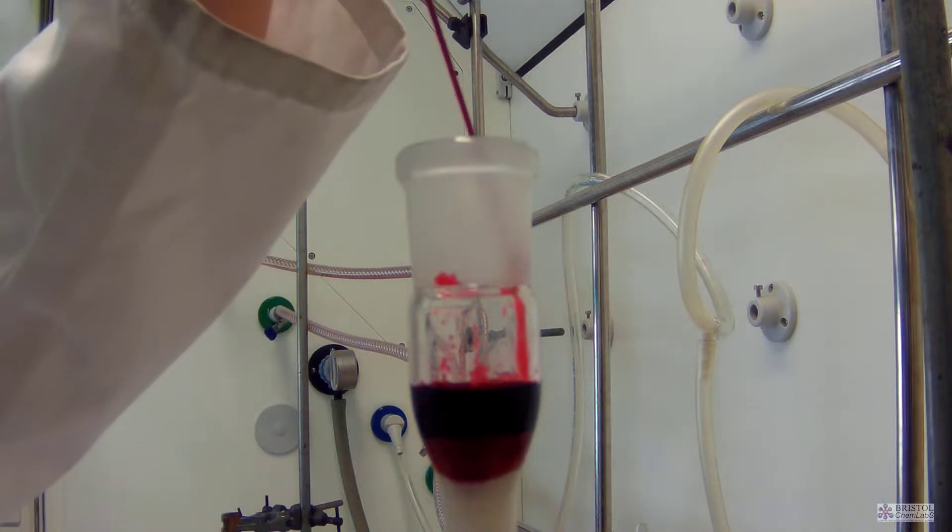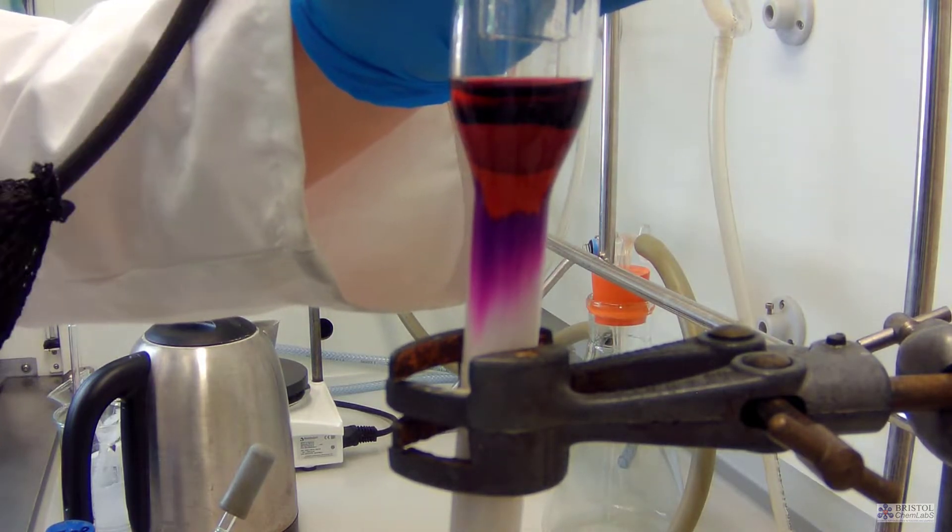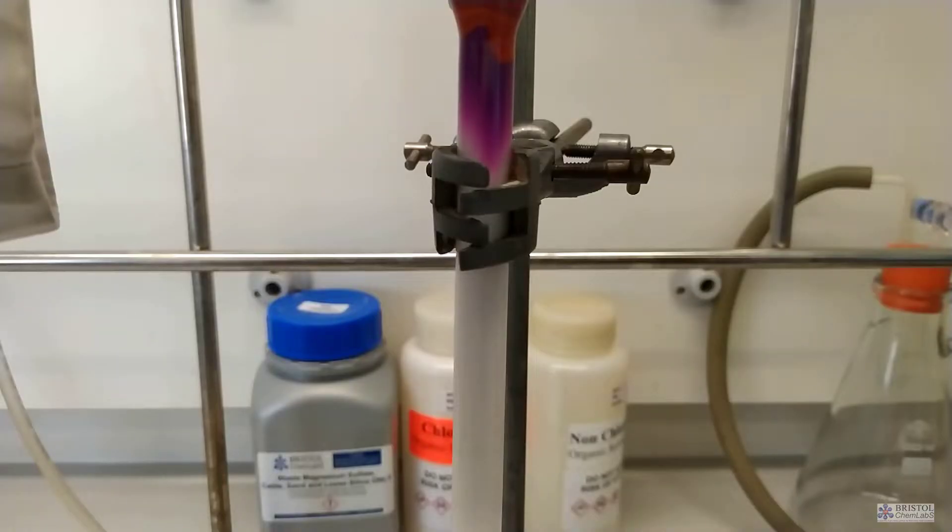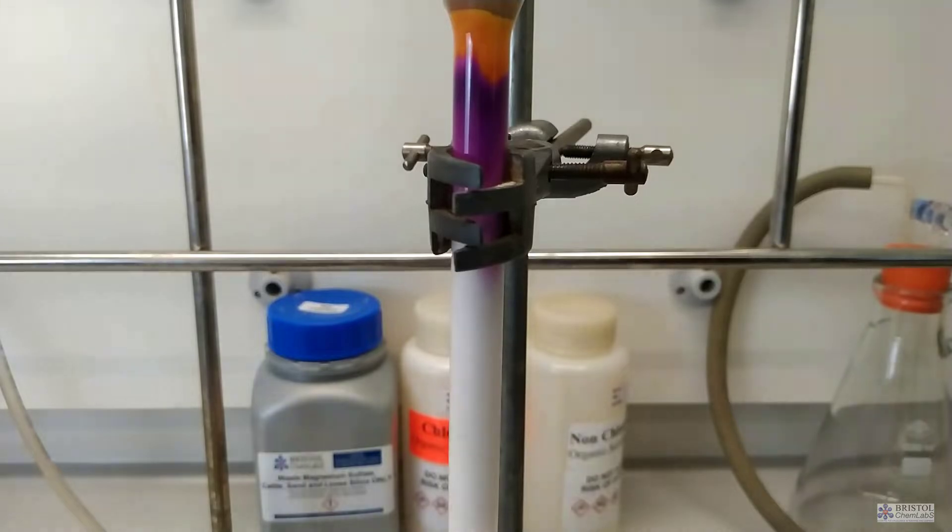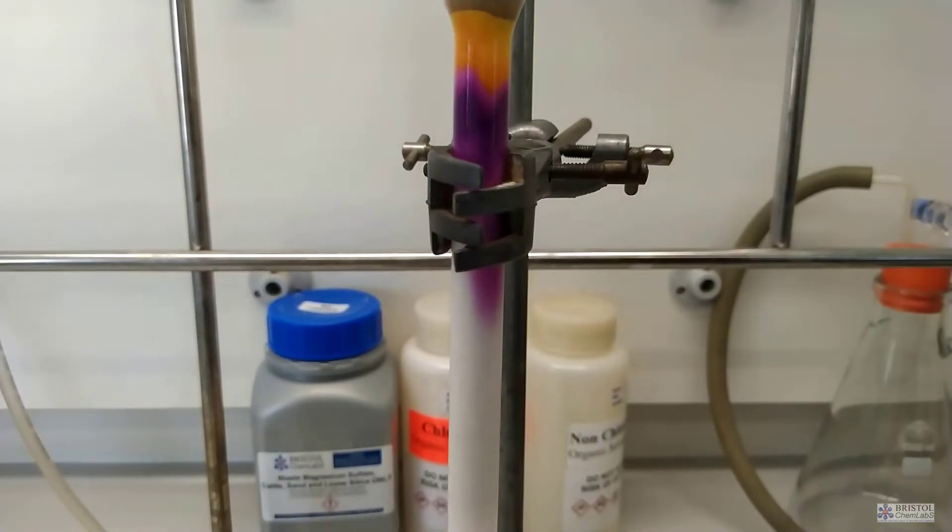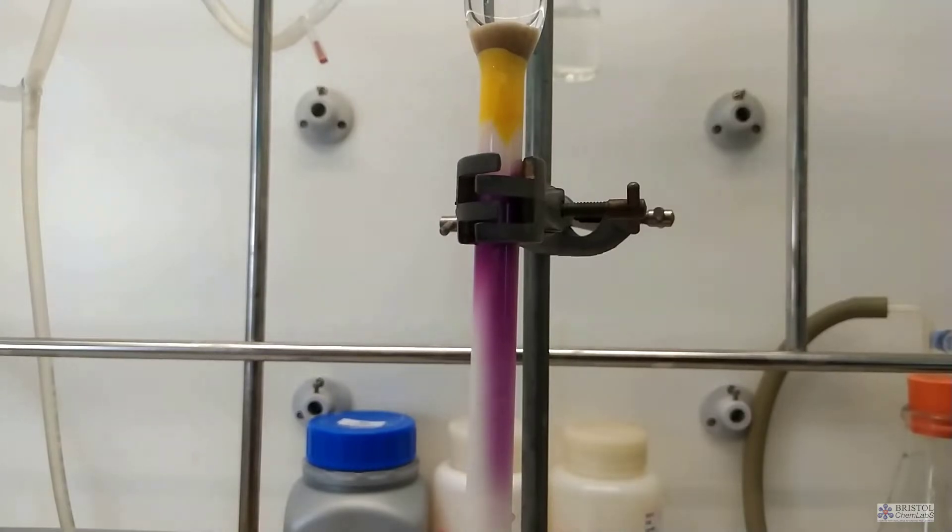The tap is opened, and the solution is eluted by passing nitric acid down the column. This will separate out the potassium manganate 7. You will notice that potassium manganate 7 passes through the stationary phase faster than the potassium chromate 6.